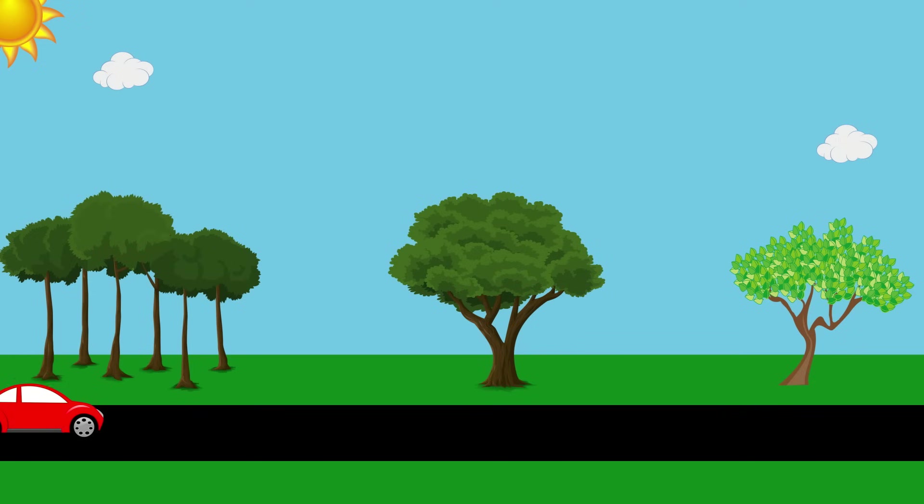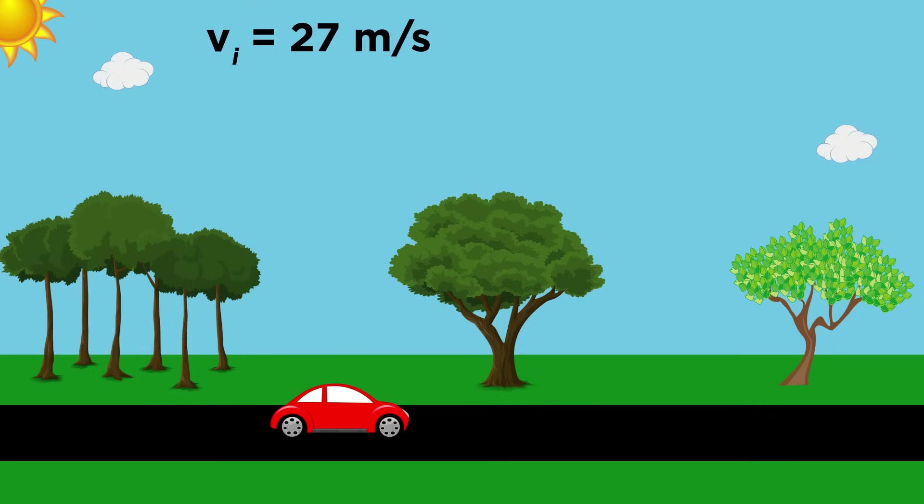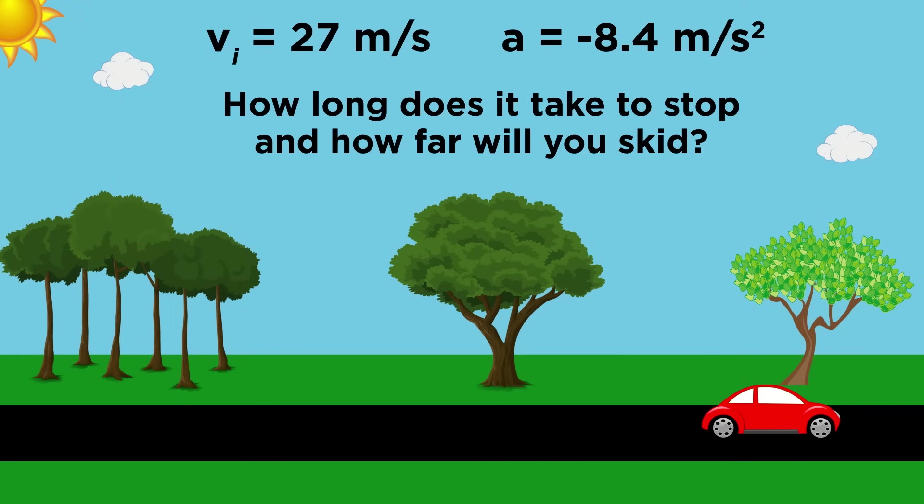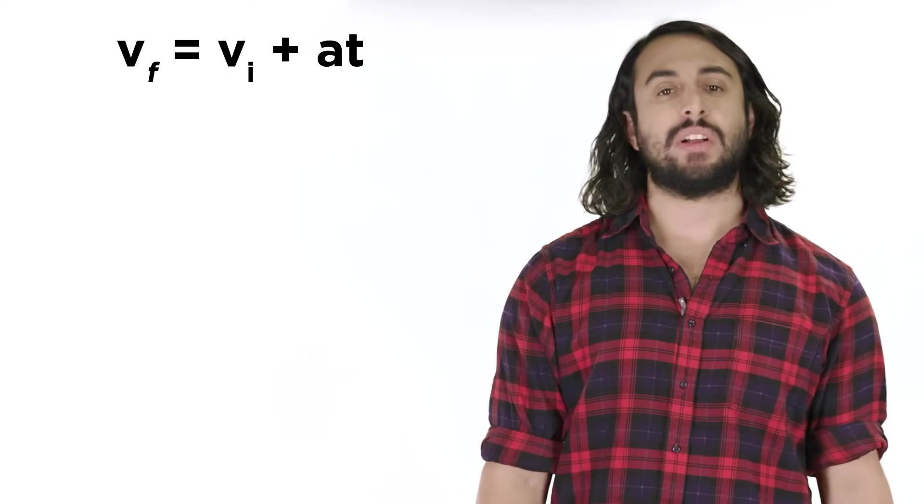Let's now consider a car that is already in motion with a velocity of 27 meters per second. Let's say you need to stop suddenly, so you press on the brakes, initiating a rapid deceleration of negative 8.4 meters per second squared. How long will it take the car to come to a stop, and how far will it travel while your foot is on the brake?